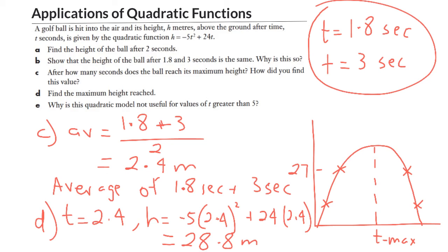I'm just going to describe the answer for part E. Why is this quadratic model not useful for values of t greater than 5? Well, if you actually go substituting t equals 5 seconds into our model here, you'll get a height of negative 5, which means that this golf ball has now gone 5 meters underground, which does not make any sense. For our model here, the time must always be positive and the height must always be positive. But at the same time, we're going to reach a time where the ball would start to go negative.